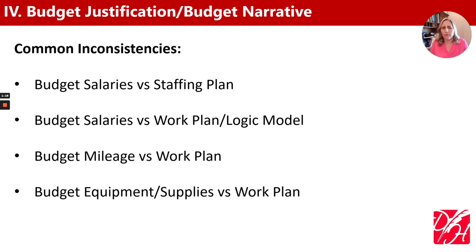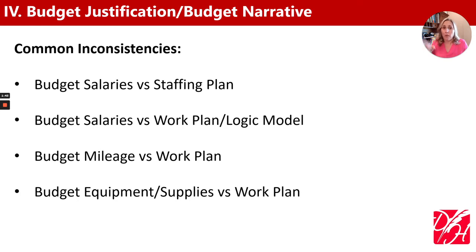For example, perhaps in our program design elements in the logic model, we have some staff listed in resources — and maybe those staff listed in the resource section of our logic model are the same as the responsible staff in our work plan — but that person isn't listed in the grant budget or our justification. That inconsistency will certainly raise a flag for the reviewers.